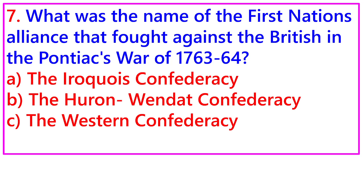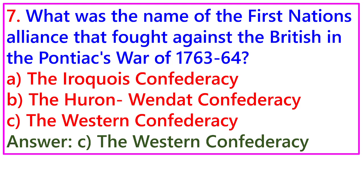Question 7: What was the name of the First Nations Alliance that fought against the British in Pontiac's War of 1763-64? A. The Iroquois Confederacy, B. The Huron-Wendat Confederacy, C. The Western Confederacy. Answer: C. The Western Confederacy.